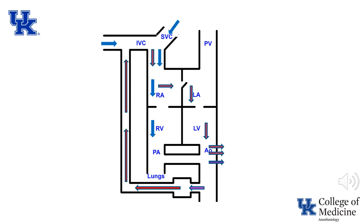After perfusing the brain, blood from the upper body returns to the heart via the superior vena cava and enters the right atrium. This blood preferentially enters the right ventricle. From the right ventricle, blood is pumped into the main pulmonary artery. Because of the high pulmonary vascular resistance, the majority of the blood entering the pulmonary artery flows through the ductus arteriosus and perfuses the lower portion of the body.